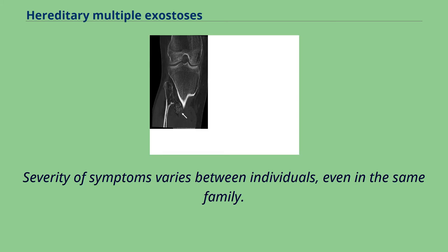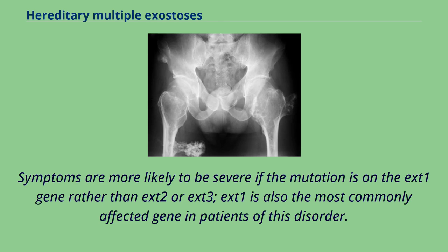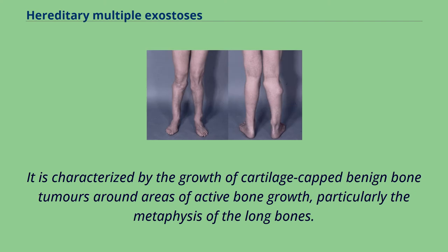Severity of symptoms varies between individuals, even in the same family. Symptoms are more likely to be severe if the mutation is on the EXT1 gene rather than EXT2 or EXT3. EXT1 is also the most commonly affected gene in patients with this disorder. The condition is characterized by the growth of cartilage-capped benign bone tumors around areas of active bone growth, particularly the metaphysis of the long bones.